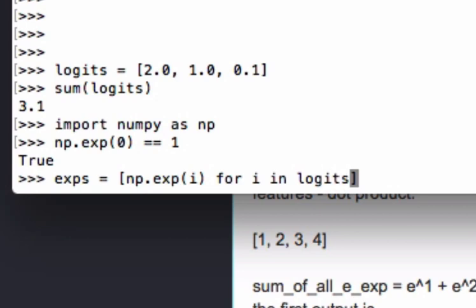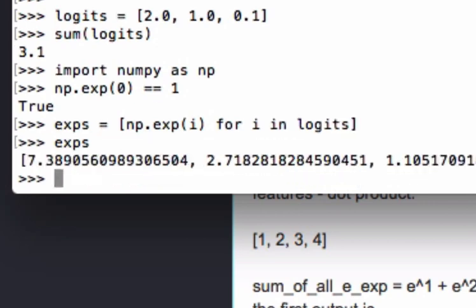So this is Python list comprehension. What it's trying to say is take each element in logit. Take, use NumPy library, e exponent function. Take the special number e to the power of that element, and then give me back a list. You will see, boom. Everything is very much larger now. You can see where the 7, 2, and 1 are starting to show at the beginning of each of these numbers.